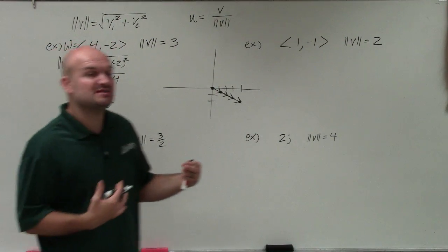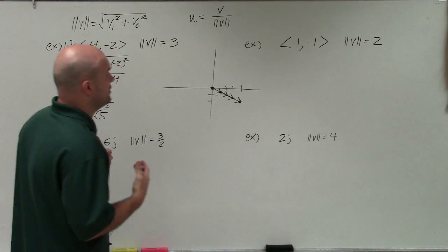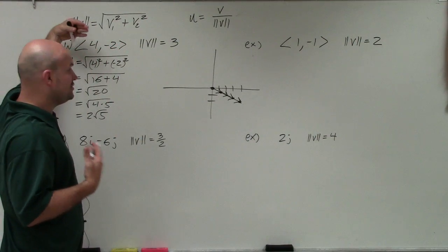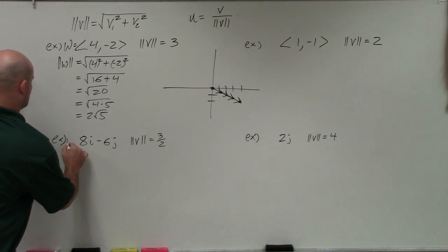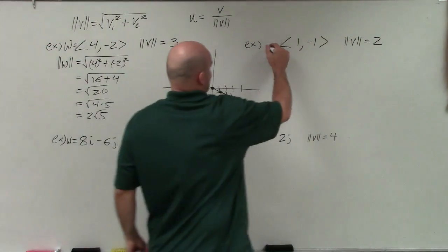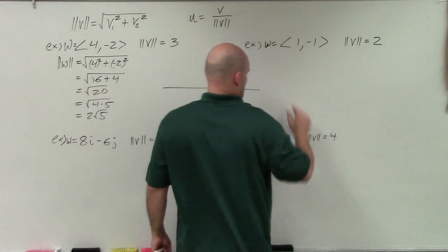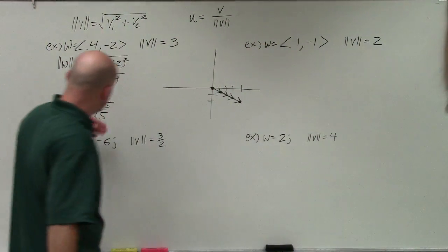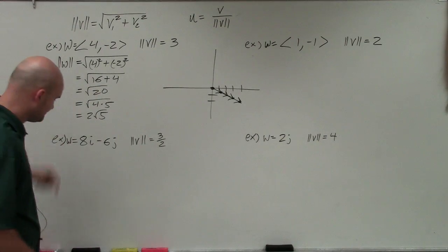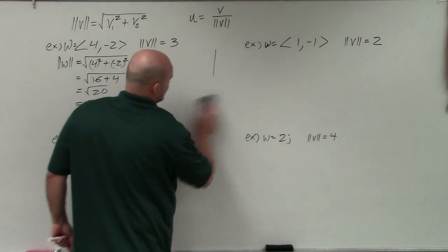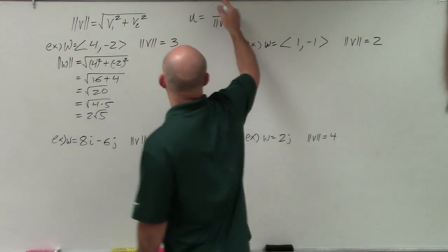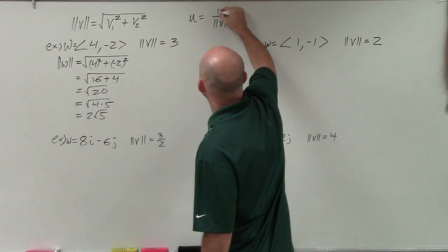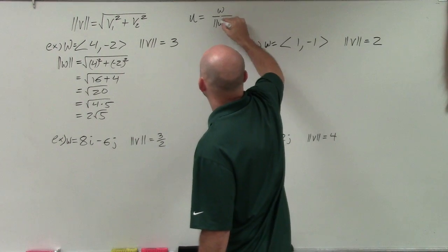So just like in our last problem as far as finding the unit vectors, the first thing we're going to want to do is find the unit vector. What we're going to first do is find the magnitude of our given vector, then we're going to find the unit vector.